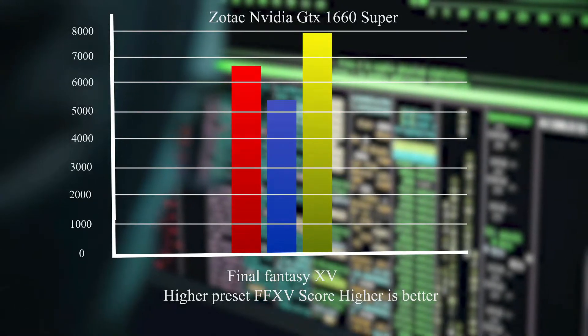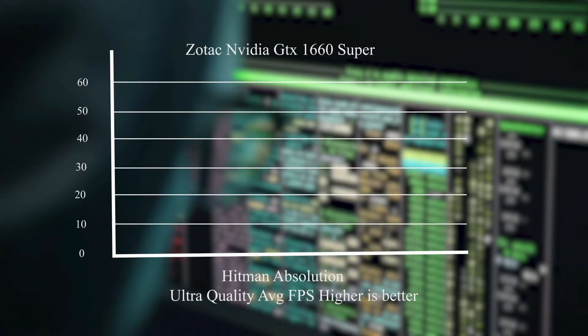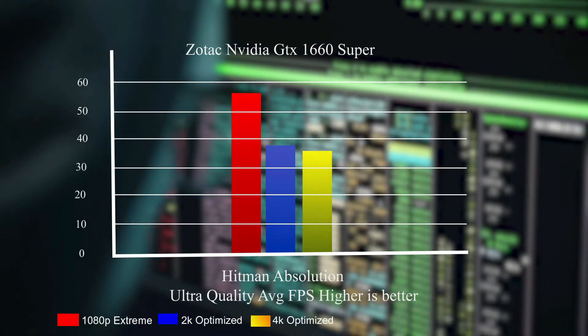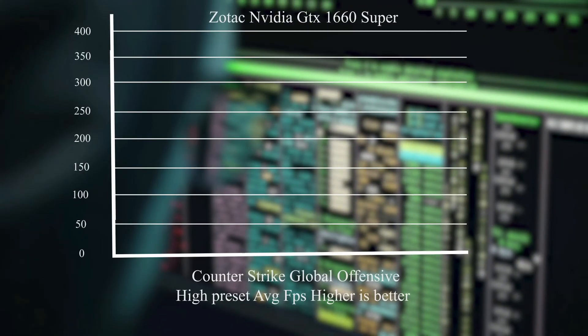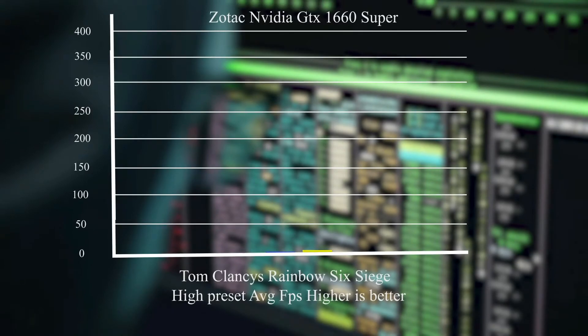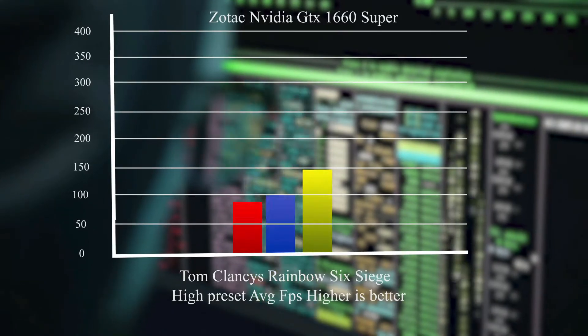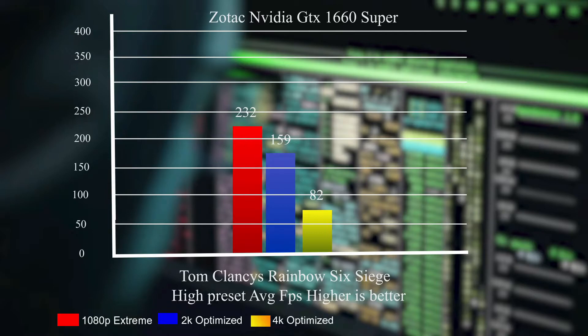In Final Fantasy XV, this card gives a whopping score on 1080p Extreme — quite surprising. In Hitman Absolution, it gives a playable but not great 53 FPS on 1080p Extreme. In Counter-Strike: Global Offensive on a high preset, the average FPS is 301 on 1080p, which is very good. In Tom Clancy's Rainbow Six Siege, the card delivers around 232 FPS on 1080p and 159 FPS on 2K Optimized, making it easily playable at 2K.